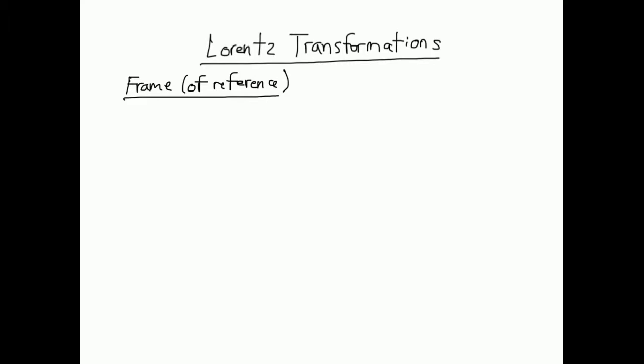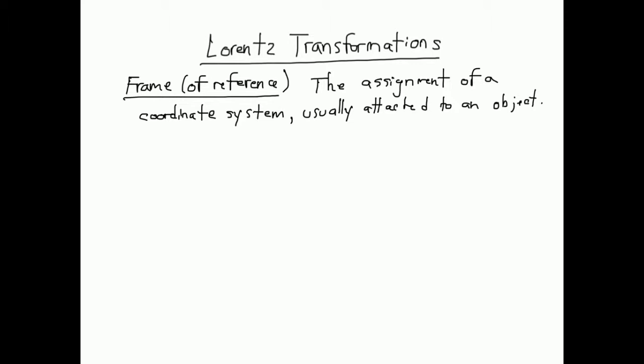The first thing we need to know is: what is a frame? A frame is basically the assignment of a coordinate system, which is usually attached to an object. And because it's attached to that object, that object is at rest in that coordinate system.